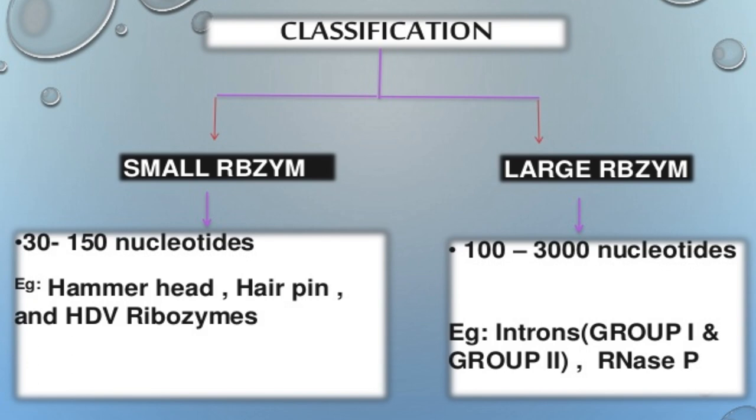Ribozymes are classified as follows: small ribozymes consist of 30 to 150 nucleotides — examples are hammerhead, hairpin, and HDV ribozymes. Large ribozymes consist of 100 to 3000 nucleotides — examples are introns Group 1 and Group 2, and RNase P.